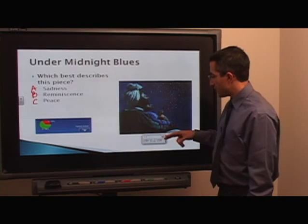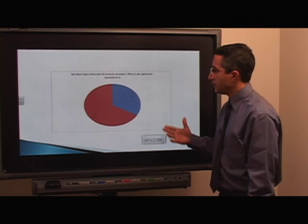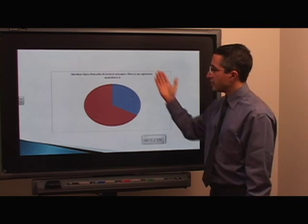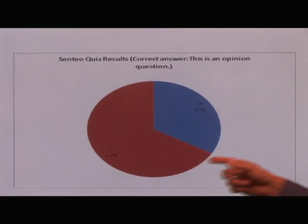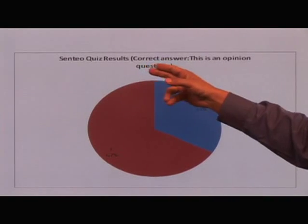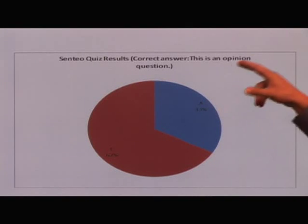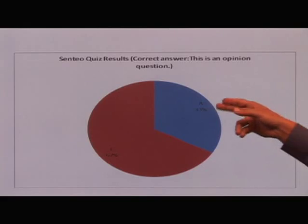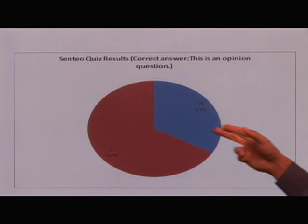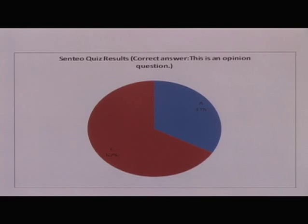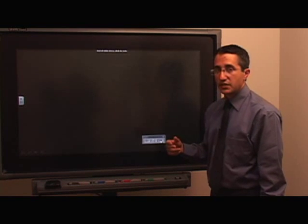I'll go to the next page. It has created a separate slide with the quiz results — since this is an opinion question, 33% said A and 67% said C. Choosing the arrow again brings us to the end of the slideshow.